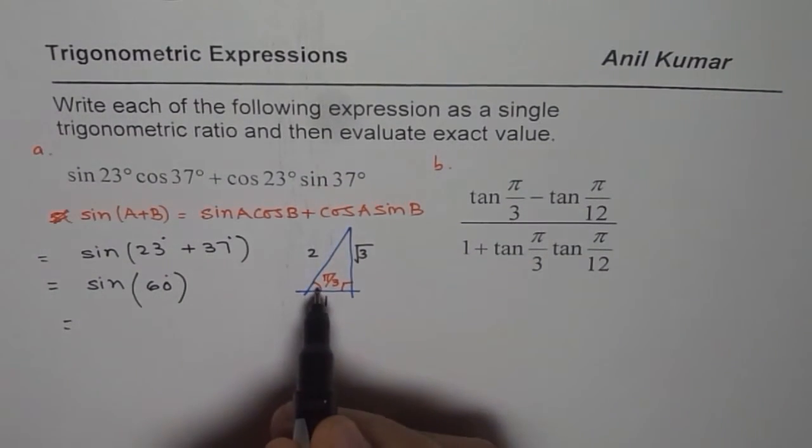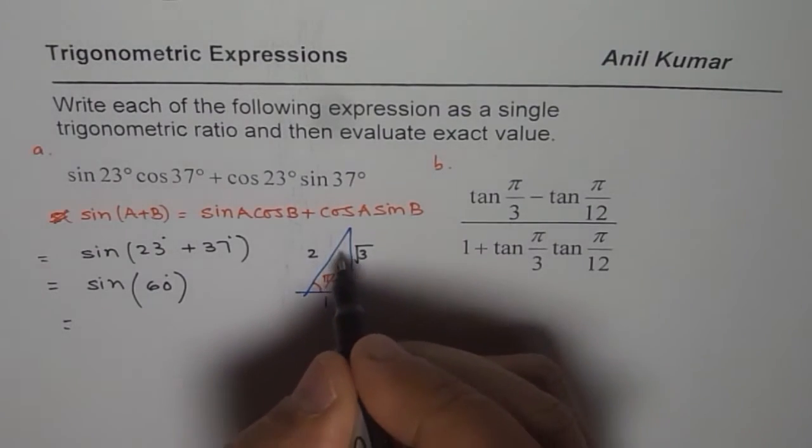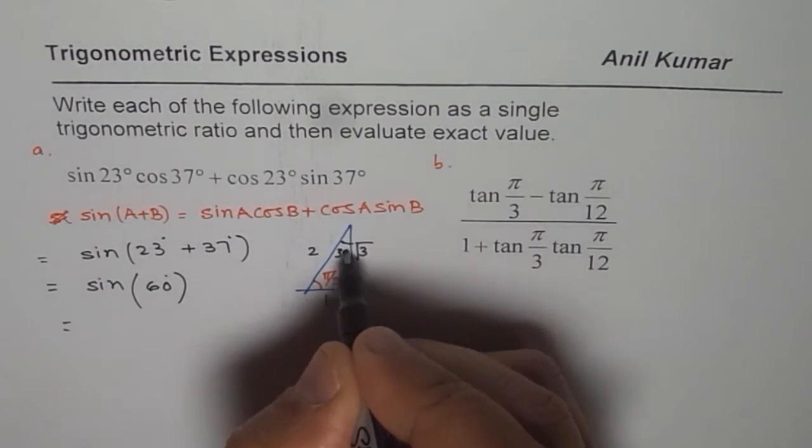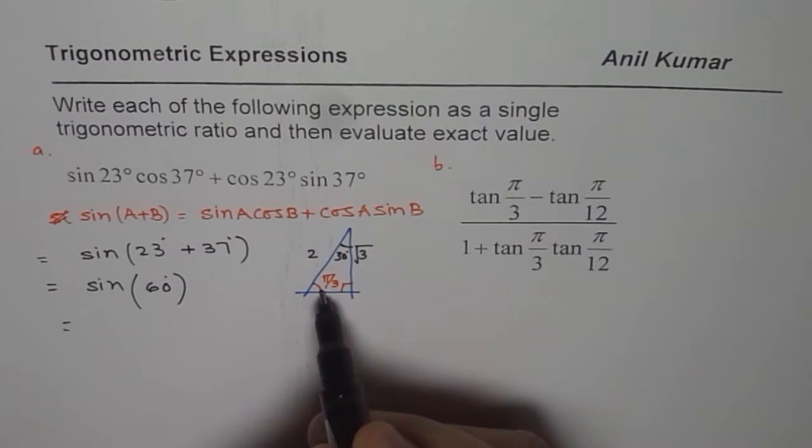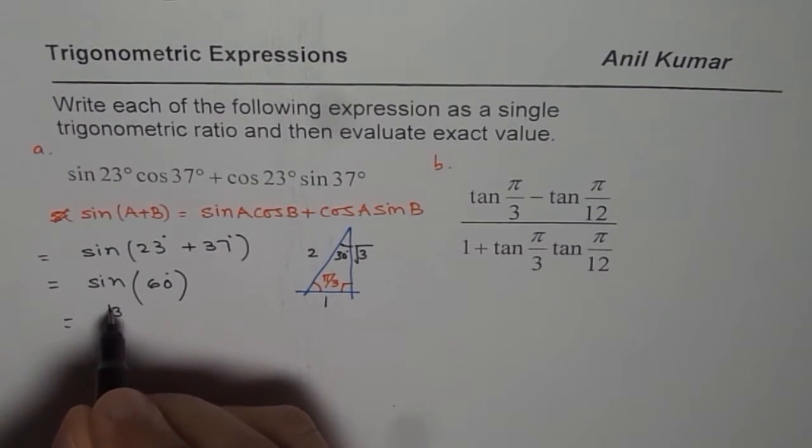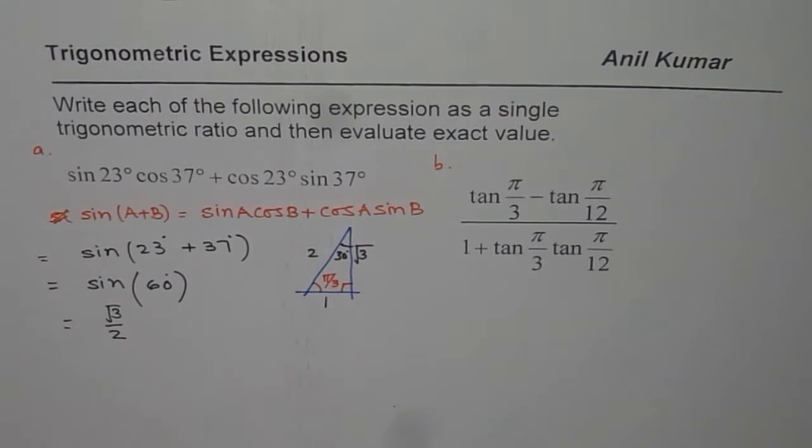So sin of 60 degrees—from here, let me write 30 degrees here. So we have a triangle in both degrees and radians. So 60 degrees will be opposite over hypotenuse, which is square root of 3 over 2. So that is our answer.